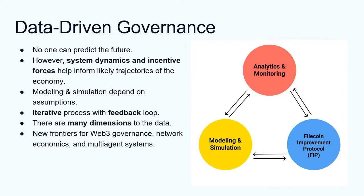We go through the Filecoin Improvement Protocol — FIP. I think there are many talks at this conference today about governance. The real answer is nobody really knows where the future would be. What we can do is model the dynamics and the forces so we can have a better understanding of what the trajectory will likely be. It also depends on many assumptions. It's our mandate and vision to try to democratize and make sure everybody understands what assumptions we put into the model. It's an iterated process with lots of feedback loops.